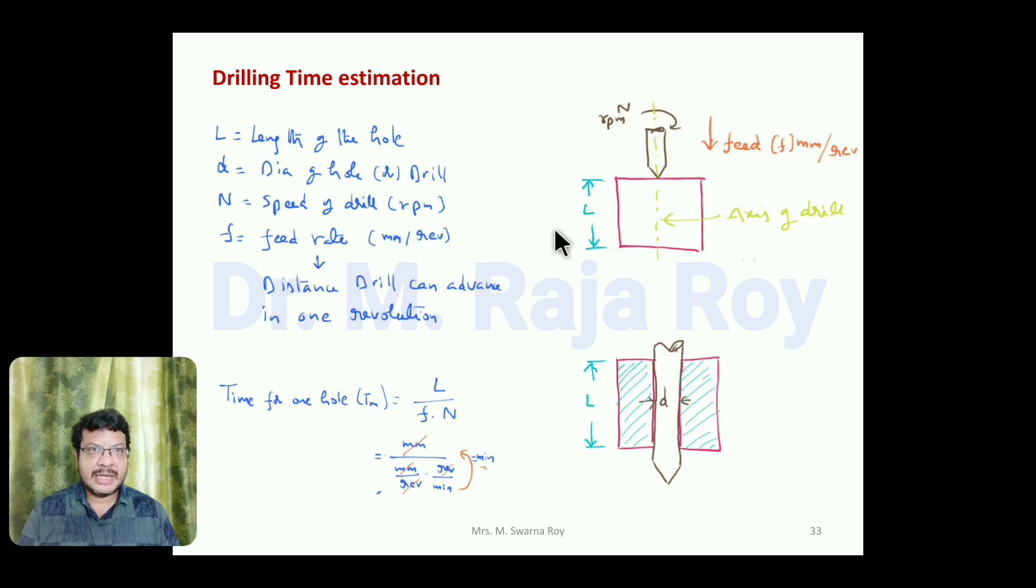In the drilling process, the workpiece is considered like this and above the workpiece we will place the drill bit. The workpiece length is L. To make a hole through the entire workpiece, the length of the hole will be L, indicated with capital L. The drill bit is rotating with N rpm and advancing downward with a feed of f, measured in mm per revolution—the distance the drill bit moves in one revolution.